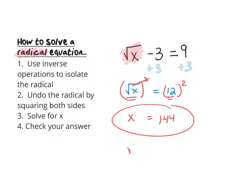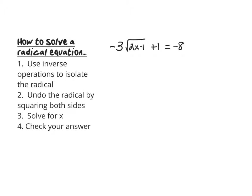If we check our answer, we plug 144 in for x and follow order of operations — the square root evaluates first since it acts as an exponent — giving us 12, and we do see that 12 minus 3 equals 9. So our next example looks a little more complex, but it's the same basic idea: wherever we see the square root, we want to get it all by itself by undoing the order of operations.